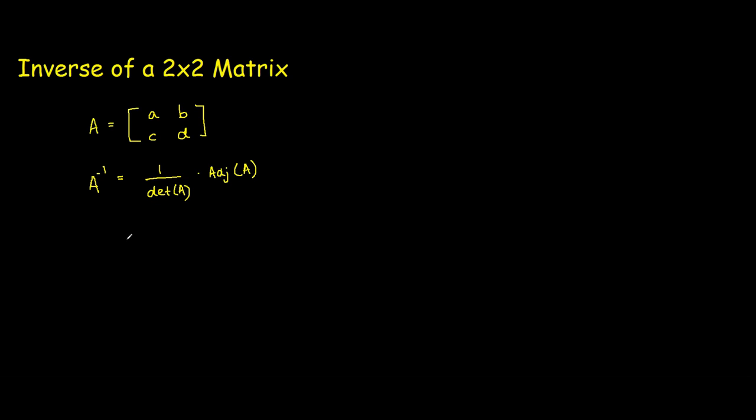So, let me just explain what the determinant of A is. It's just a rule where the determinant of A equals A times D minus B times C. And the adjugate of A is where you flip the positions of A and D in the matrix and apply a negative to the B and C in the matrix.